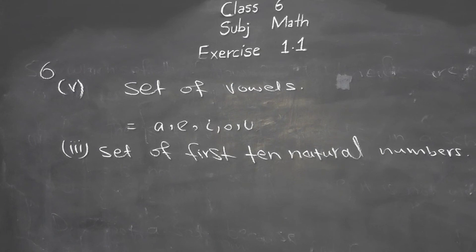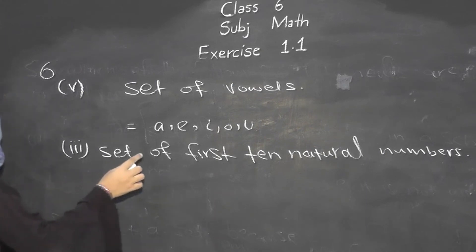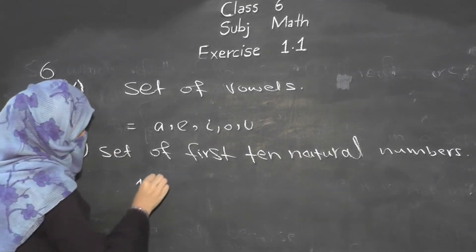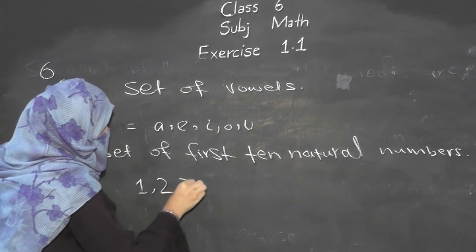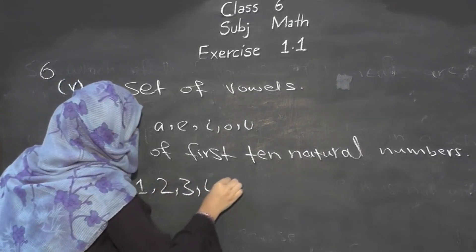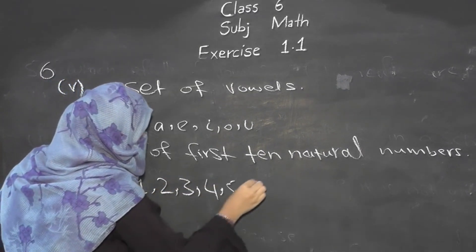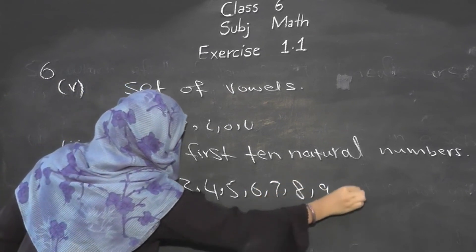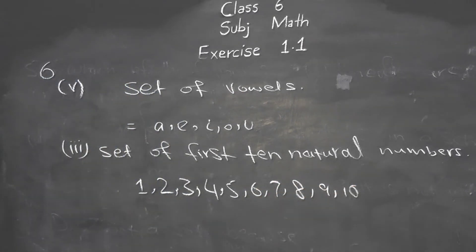Whole numbers start from 0: 0, 1, 2, 3... So if we write the first 10 natural numbers: 1, 2, 3, 4, 5, 6, 7, 8, 9, 10. These are your first 10 natural numbers.